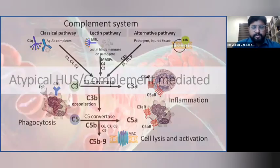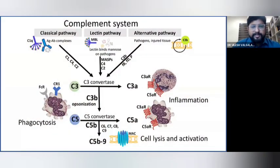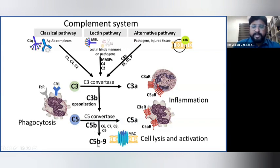Now for atypical HUS pre- and post-transplant workup: atypical HUS involves over-activation of the alternate complement pathway. In the complement system, the classical pathway is triggered by antigen-antibody complexes, the lectin pathway by lectin binding to mannose on pathogens, and the alternate pathway is directly activated by pathogens and injured tissue. C3 convertase converts C3 into C3a and C3b; C5 is converted to C5a by C5 convertase, and the membrane attack complex is formed by C5b through C9. This MAC causes cell lysis and activation of inflammatory markers.